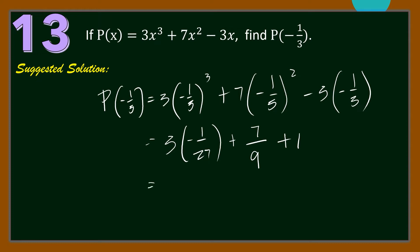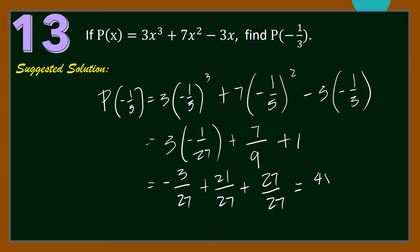So we have −3/27 plus 7/9, writing with 27 as the denominator gives 21/27, and 1 is equal to 27/27. Then we have −3 + 21 + 27 = 45 over 27. This simplifies to 5/3, since 45 ÷ 9 = 5 and 27 ÷ 9 = 3.